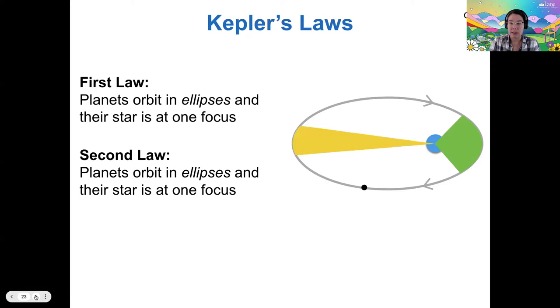The second law told us that in equal amounts of time, planets traverse equal areas. And the third law is mathematical.